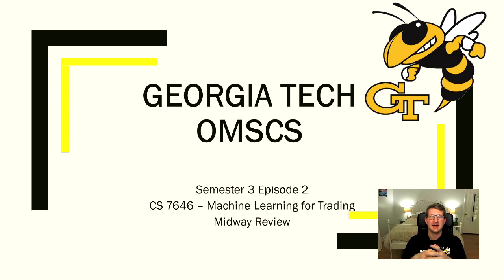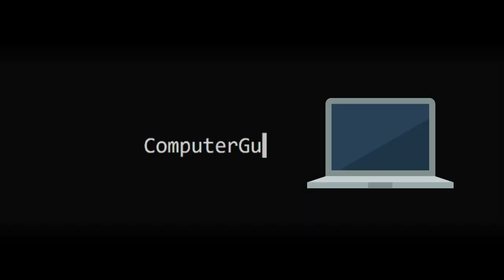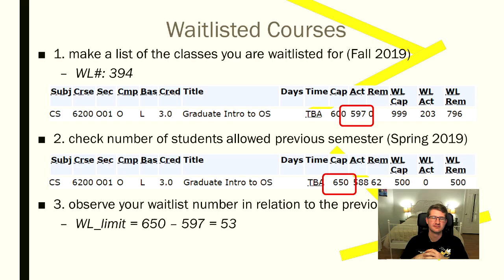Good day subscribers. Today is episode 2 of semester 3, CS7646 Machine Learning for Trading midway review. If you'd like to see the previous episode before watching this one, click the banner in the upper right hand corner. In the last episode we talked about waitlisted courses and how you can do a simple calculation to figure out whether or not you were likely to get into a course you were waitlisted for.